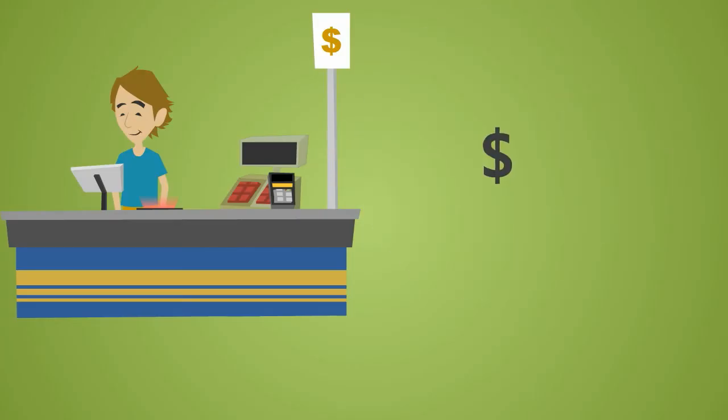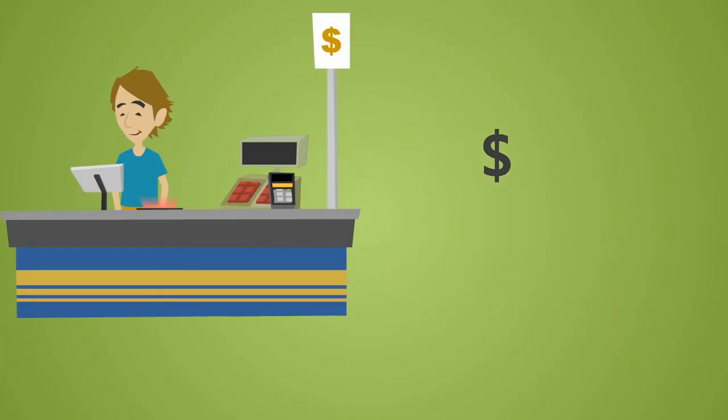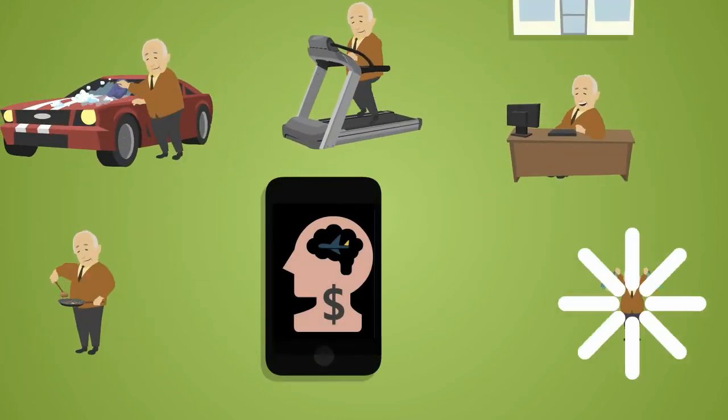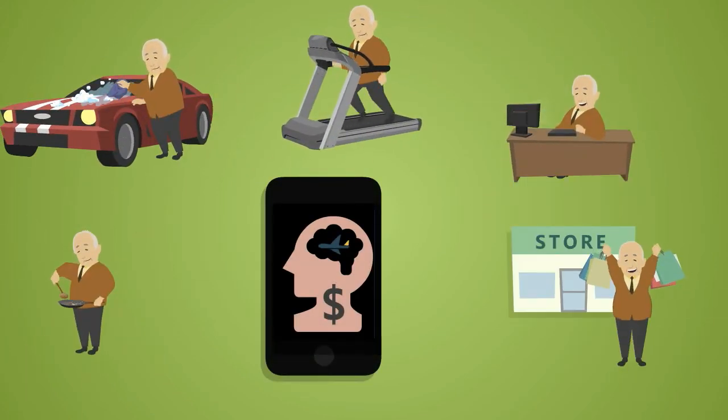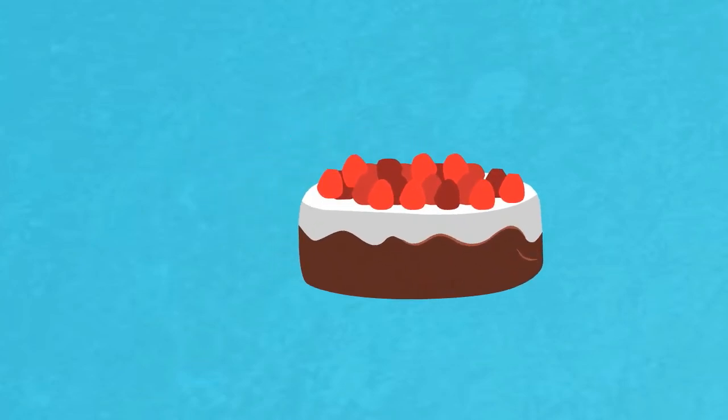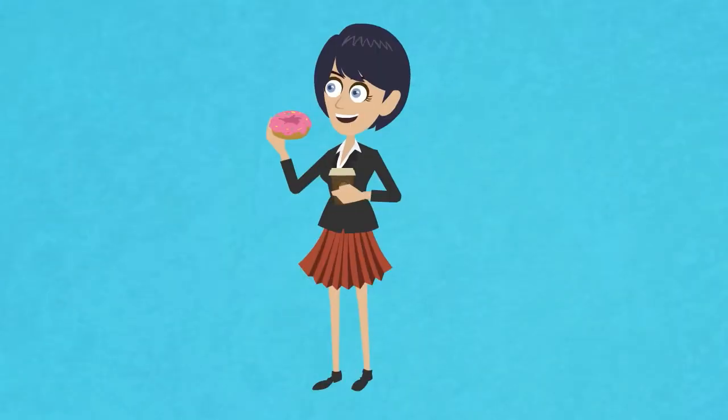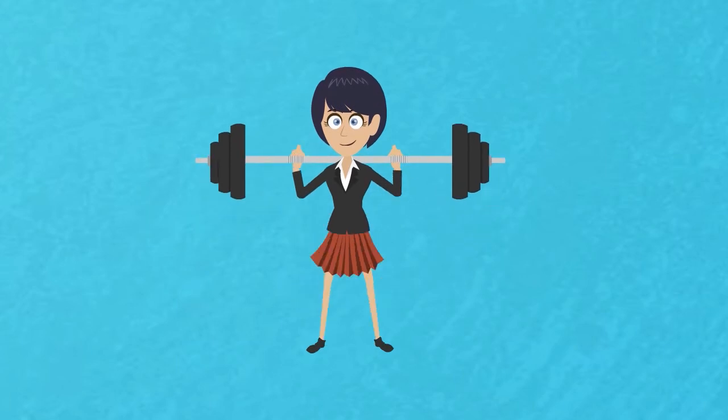And with Autopilot Premium, you can do multiple actions all at once. So, have your cake, eat it too, and be working out at the same time.